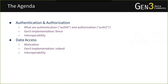For the agenda, we'll explain the flow for data access. First, we'll talk about authentication and authorization — what these terms mean, sometimes referred to as AuthN and AuthZ. We'll look at the Gen3 implementation called Fence, and how Fence interoperates with both the rest of the Gen3 stack and with outside services and other platforms. Then we'll look at data access, the fundamental problems for data access in a commons, and the Gen3 implementation called IndexD, and how IndexD works within the rest of the Gen3 stack.